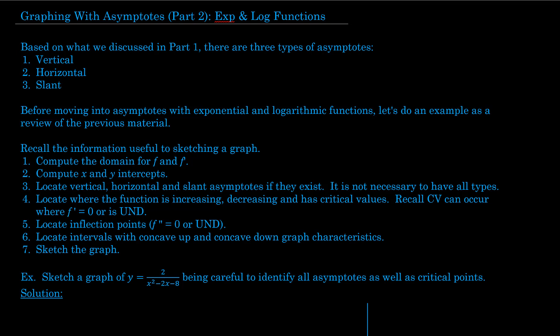In the previous video, we talked about three different types of asymptotes that can occur: vertical asymptotes, horizontal asymptotes, and slant asymptotes.